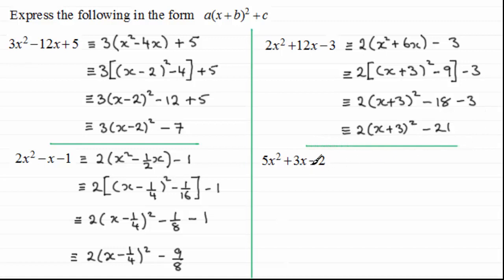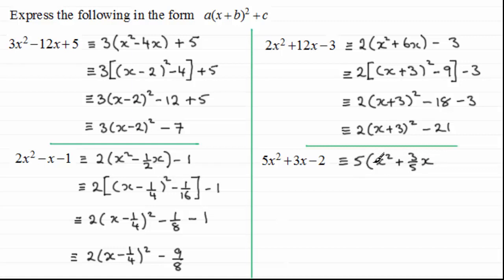Now with this next one we're going to have one that involves a lot more fractions. We pull out the 5. We have a bracket here — it's going to be x squared. And for the next term, for 3x, it's going to be 3 fifths x. 5 times 3 fifths x — the 5s will cancel, just leaving you with 3x, which is what we need there. So close the bracket off and then we've got the minus 2.